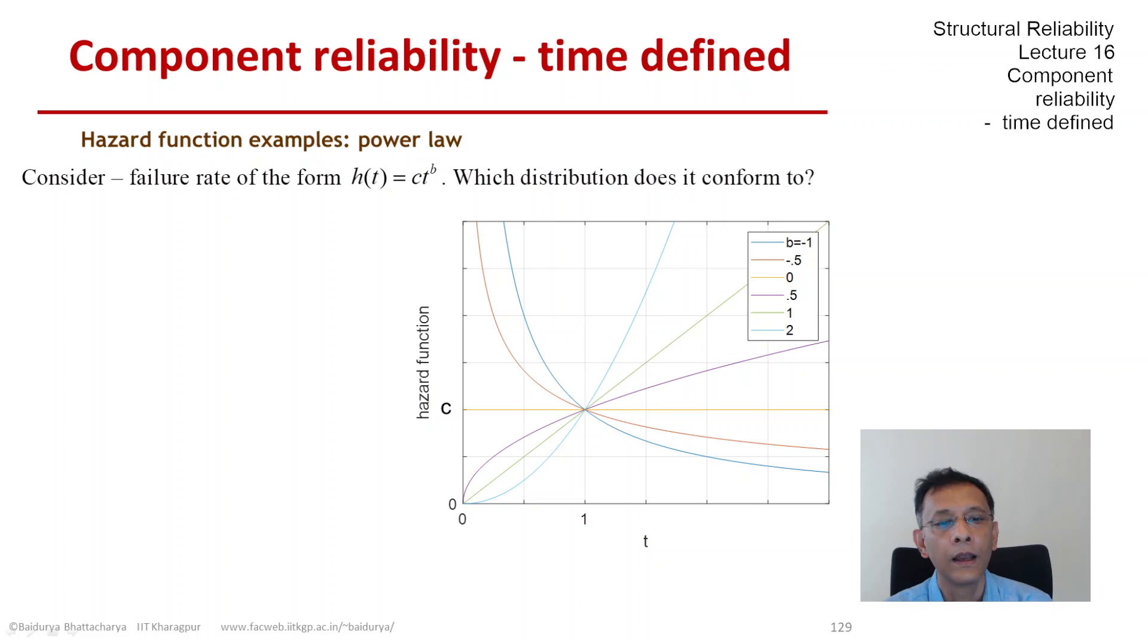On the other hand, when b is less than zero, say b is -0.5, then we have the orange curve which gracefully starts from a very high value and then keeps falling. b equals -1 is also shown there, which has an even faster drop.